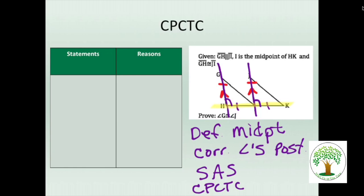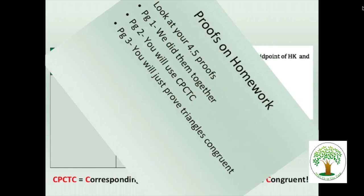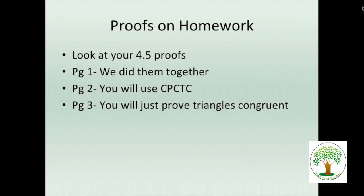The next page should have, you're going to fill in the blanks except for the last one. So let me just give you some little hints on that page too. Look at your proofs on 4.5. Page one we did together. Page two, you will be using CPCTC. So this is page one we did together. Page two, we'll use CPCTC on this. But page three, you will just be proving the triangles are congruent. There's three pages of proofs. We did one together. There's going to be a second one. You'll practice the corresponding parts of congruent triangles. And the next one, you're just proving the triangle is congruent. Practice from before.